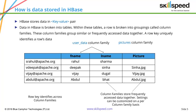Within the row key you have a concept called column family. A column family is a collection of columns that are accessed very frequently. A column family can have only one column or more than one. Here we have two column families: one called 'user data' and another called 'pictures'. Inside the column family 'user data' there are two columns — first name and last name — and inside 'pictures' there is only one column.